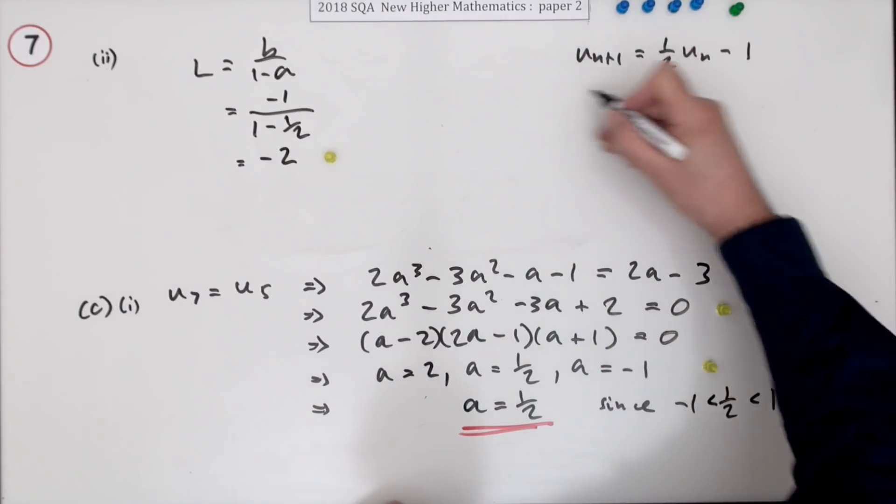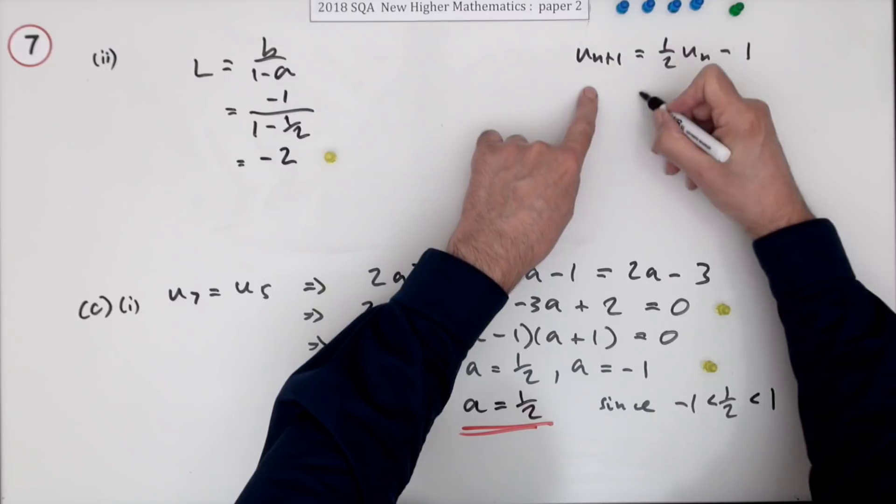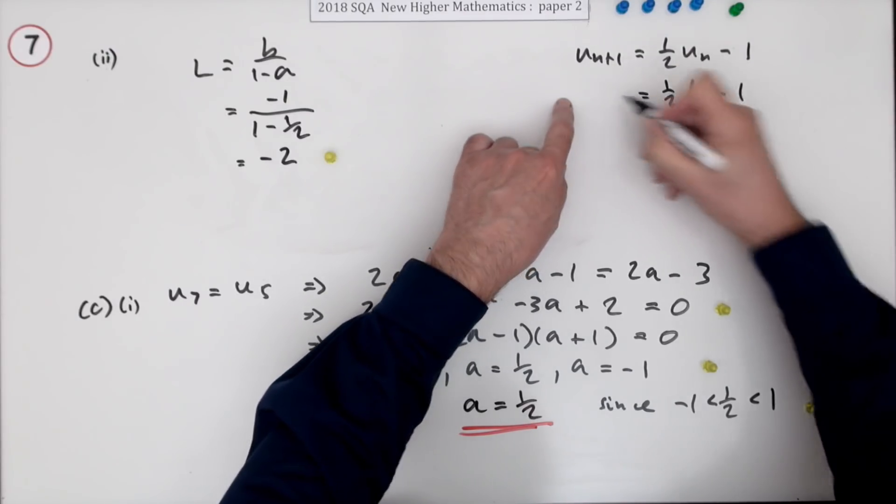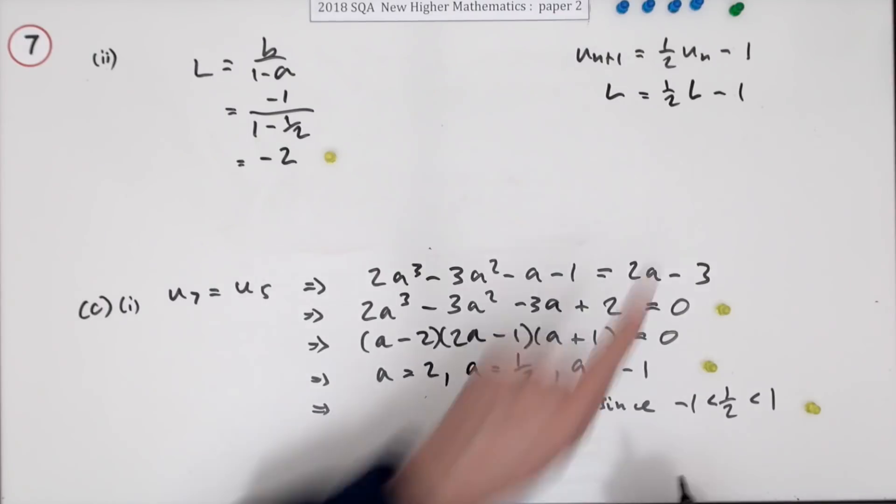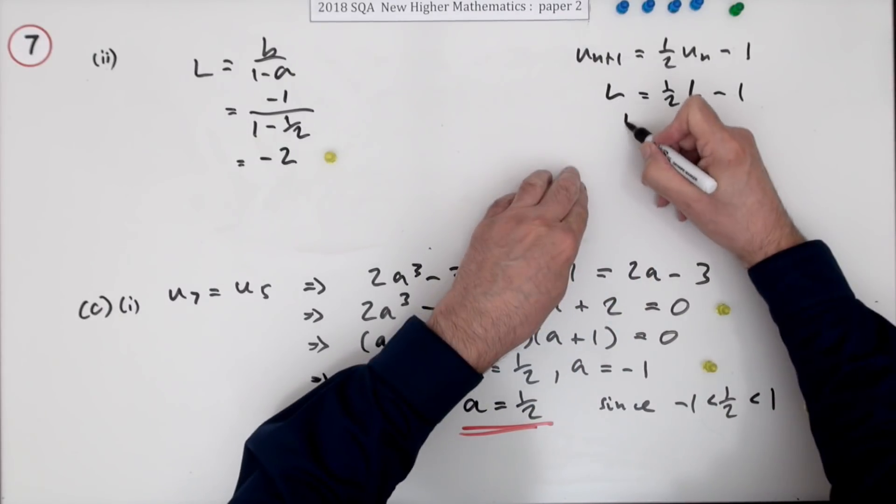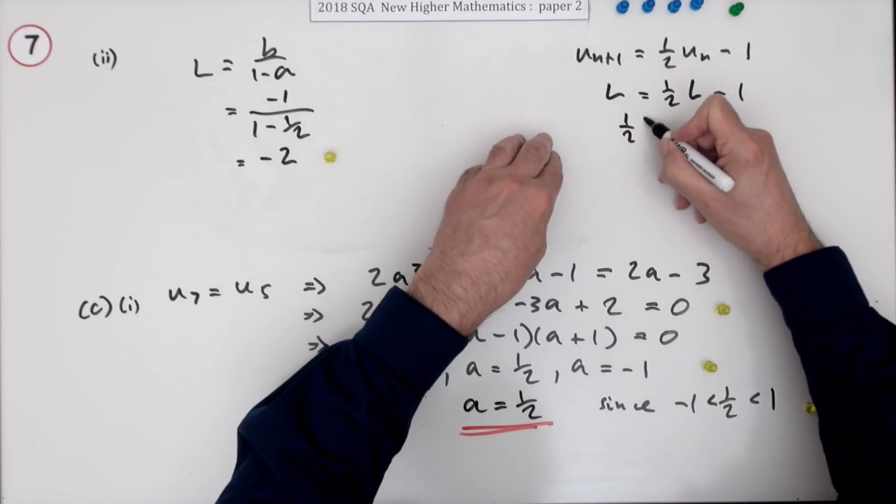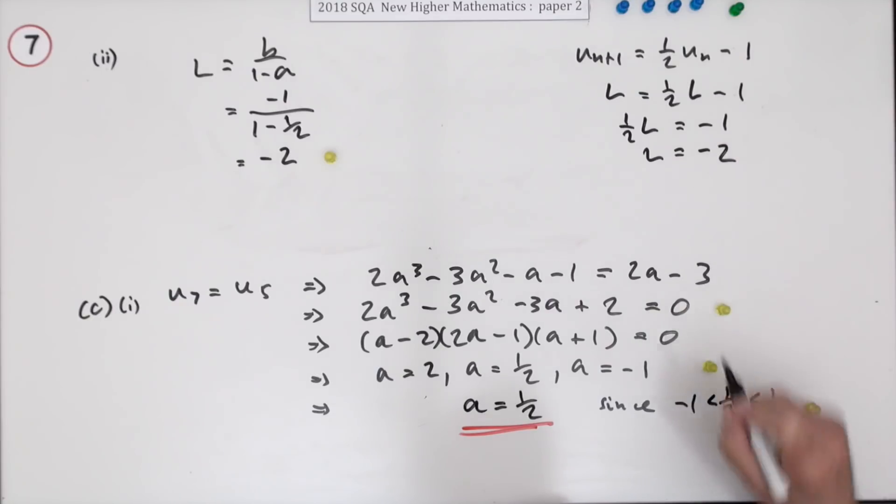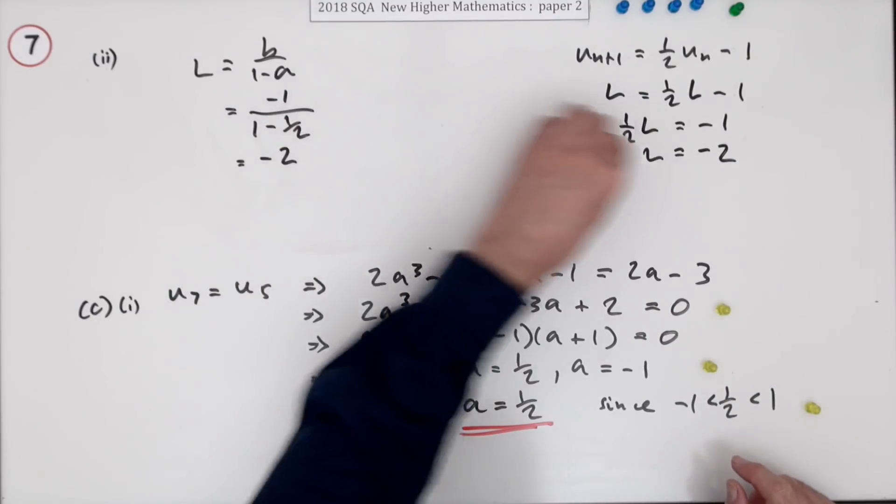The alternative would be to say this. You'll have reached the limit when the value you put in is equal to the value you get out. So taking that across gives you one take away a half. It's a half L. It's negative 1. Taking the 2 across and multiplying gives you negative 2. The same both ways.